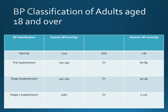This chart shows what is considered prehypertension, stage 1 hypertension, and stage 2 hypertension. The current parameters are much lower than previously established, with the desired blood pressure now being less than 120 systolic, and the diagnosis of hypertension starting at 140 systolic.